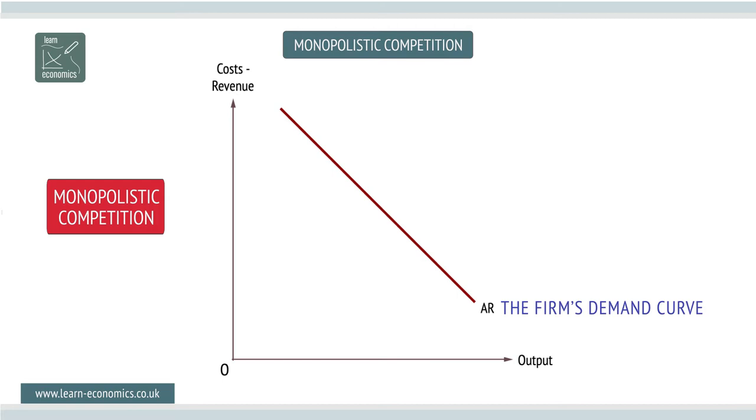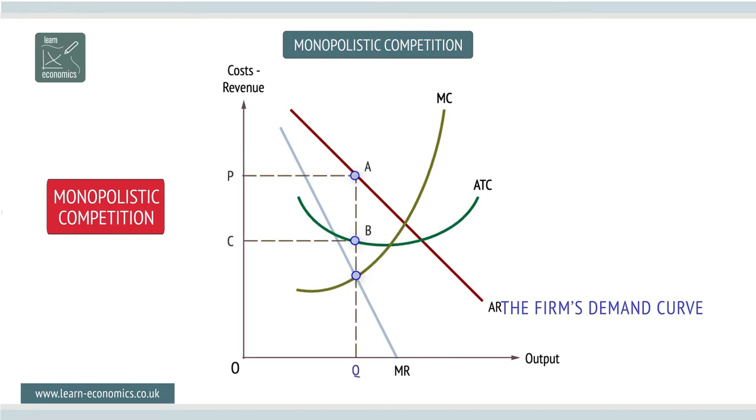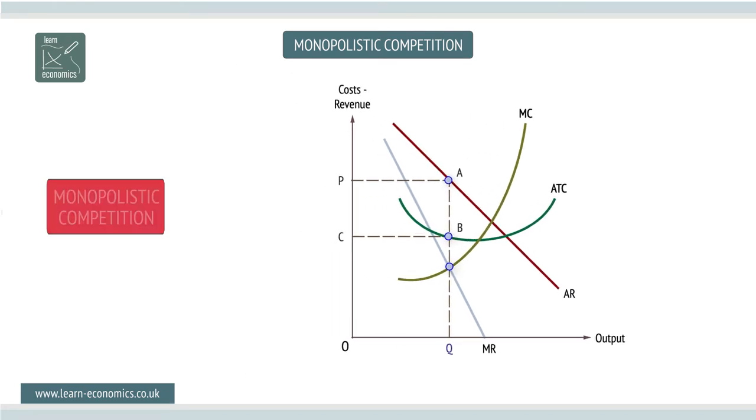Marginal revenue, MR, will fall at twice the rate of AR. As there are no significant barriers into the market, many competitors will enter the industry. Each firm will, however, be able to differentiate its good or service from its rivals, and hence set its own price.